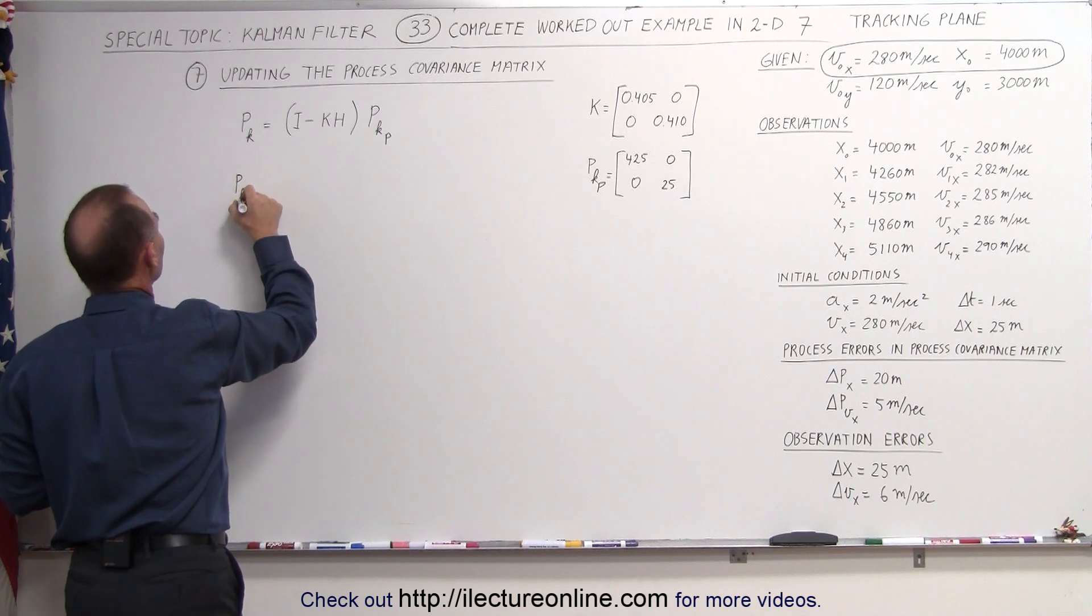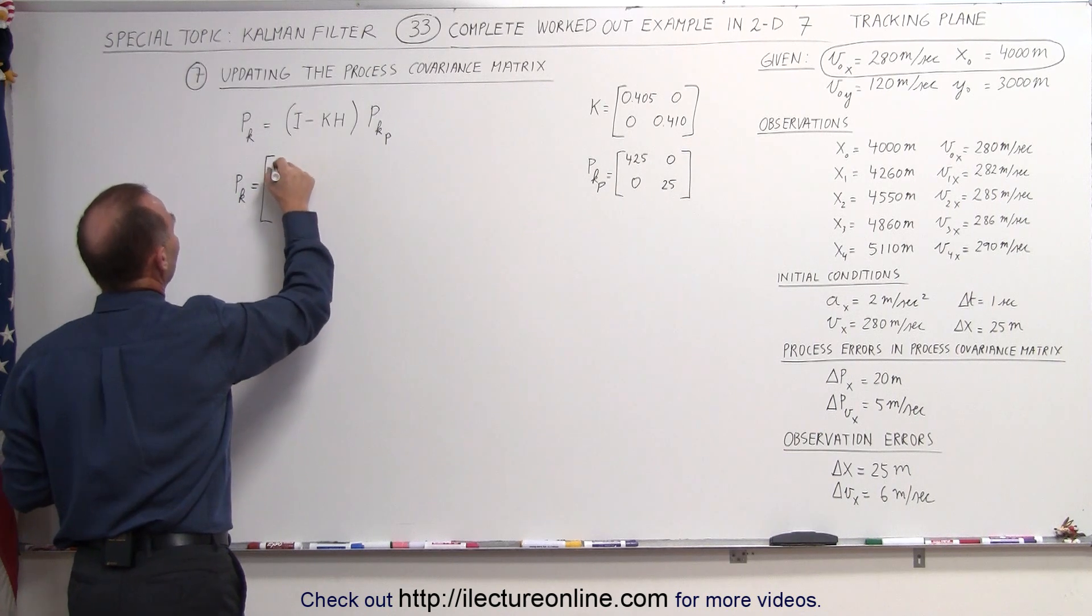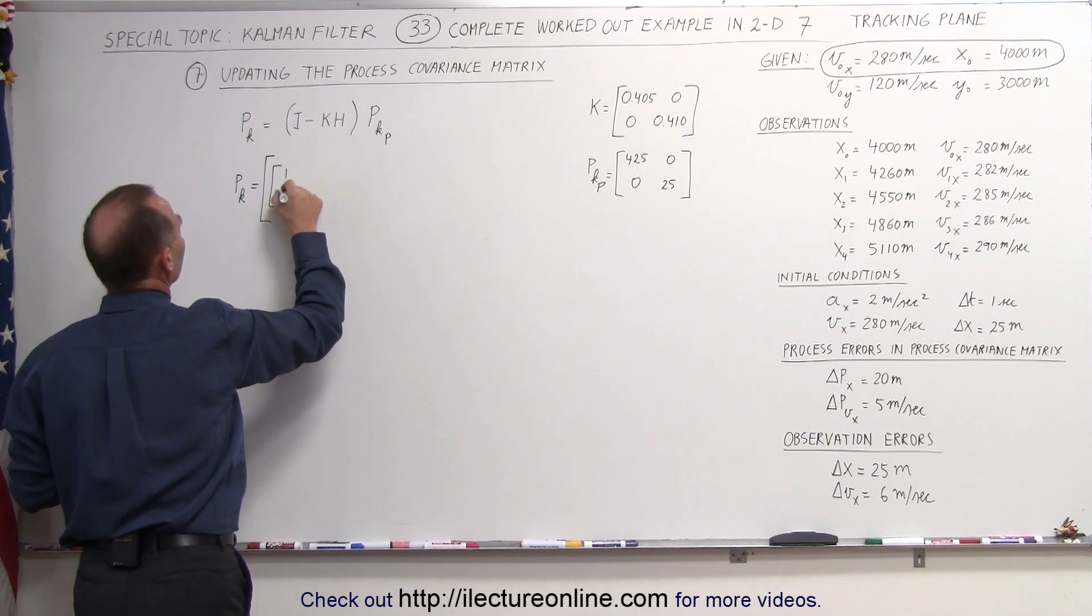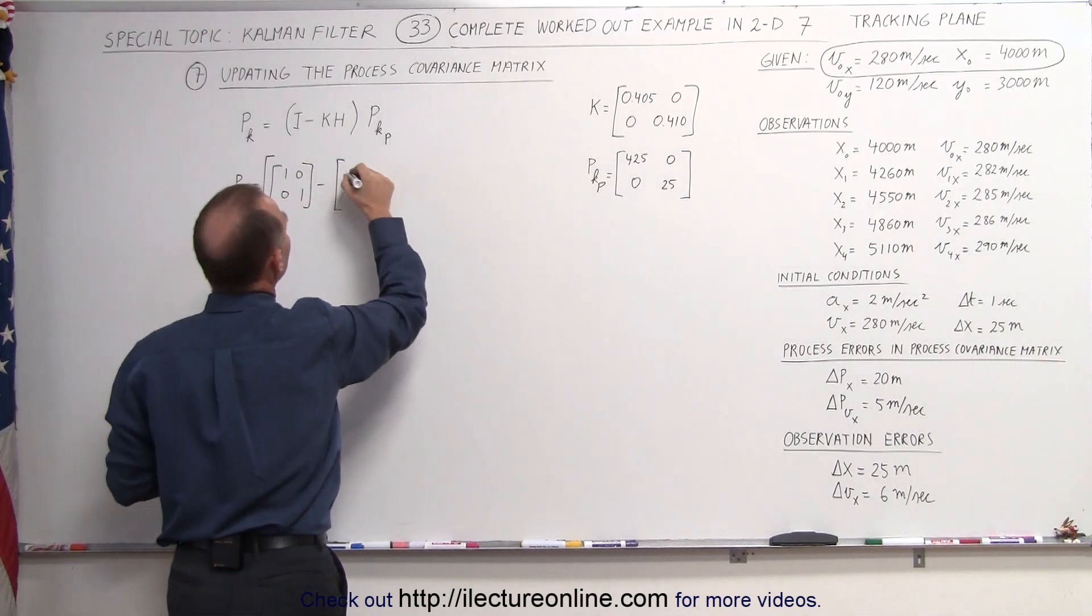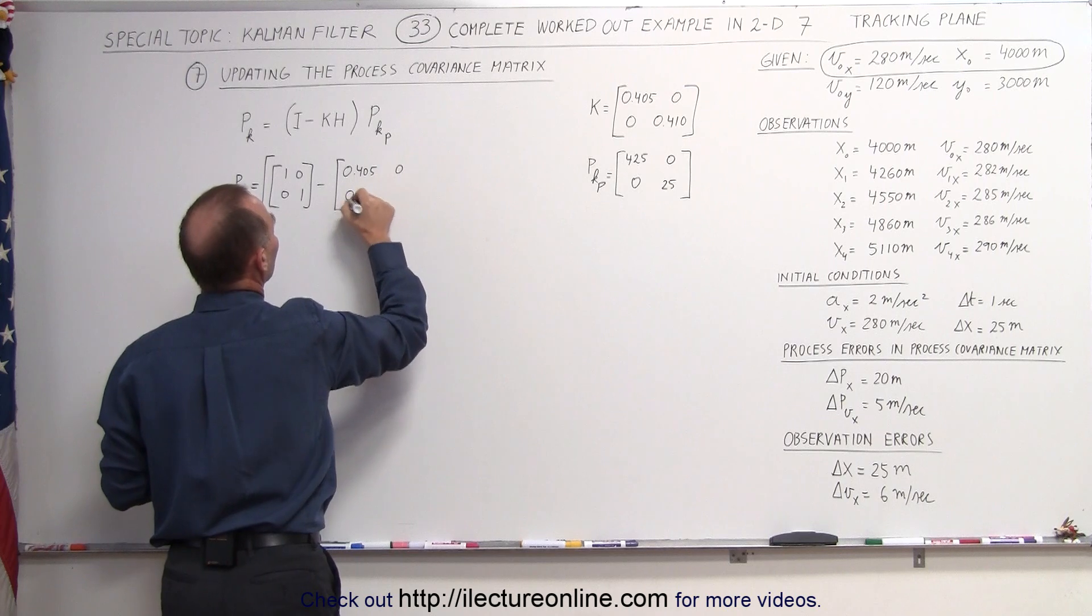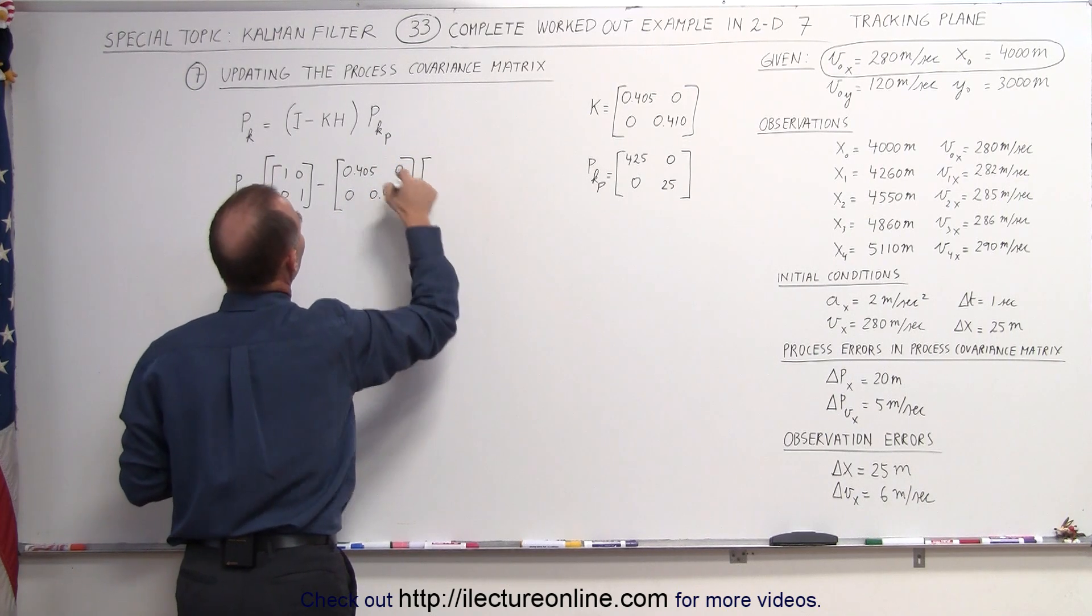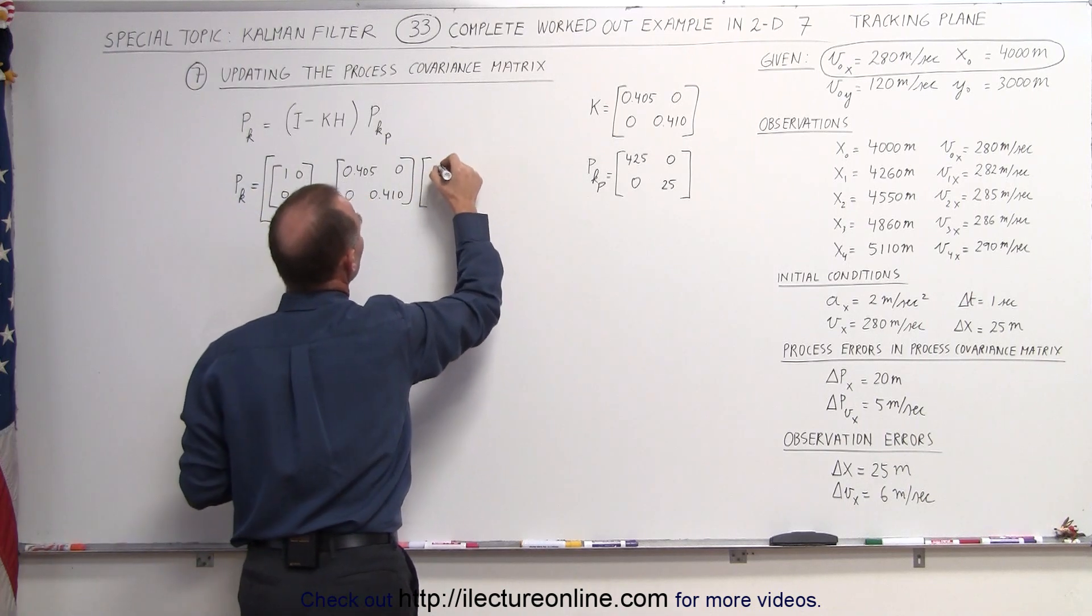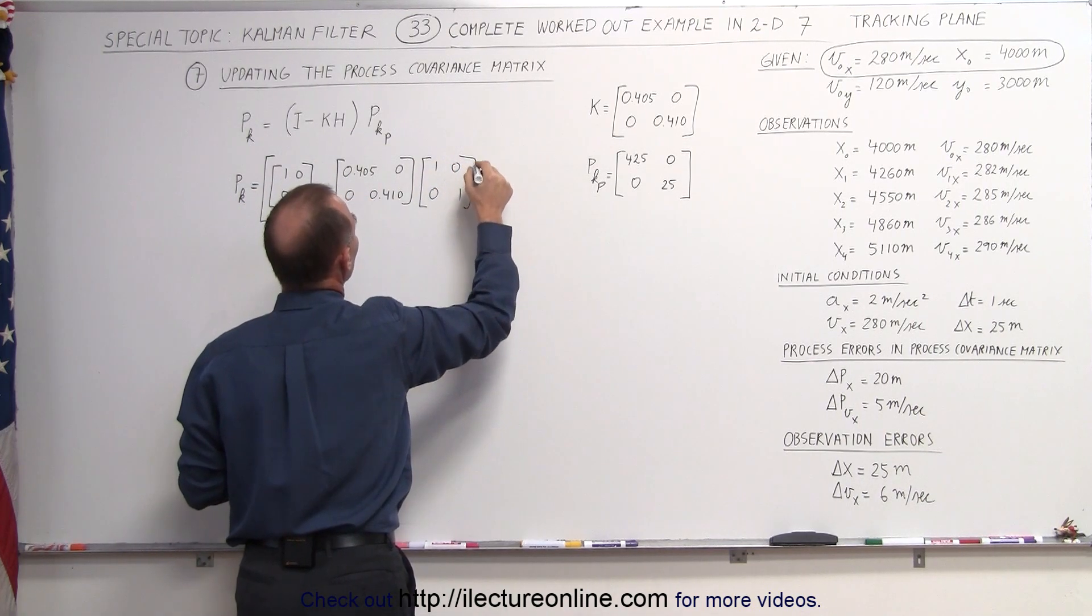So the updated, the current process covariance matrix is equal to, here we have the identity matrix, minus the Kalman gain. The Kalman gain is 0.405, 0, 0, 0.410 multiplied times the H matrix, and the H matrix is simply going to be, again, just the identity matrix to keep it in the same format.